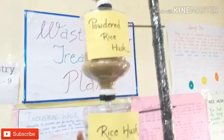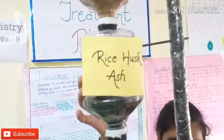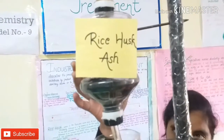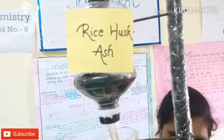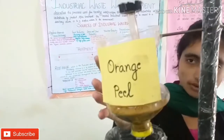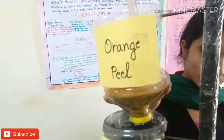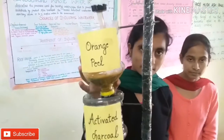We have used rice husk ash, which is applied in the water. We have also used bacteria to treat the water. It is used in a bio-structure and applied in the water. Then we have used orange husks, oil, and acidic dyes, which come from textile industries.